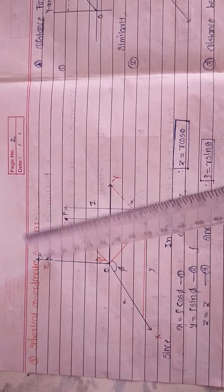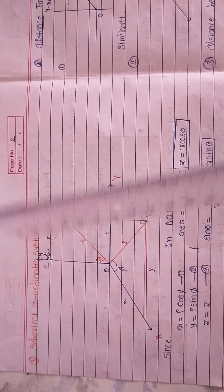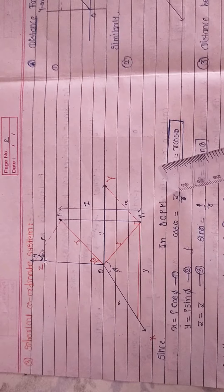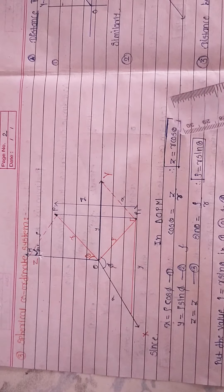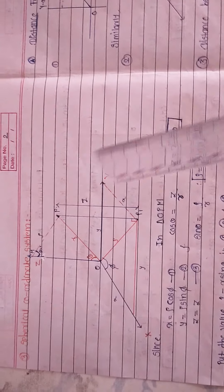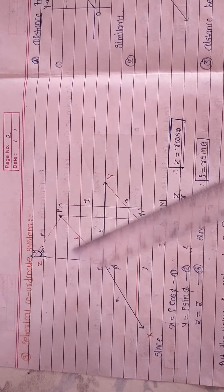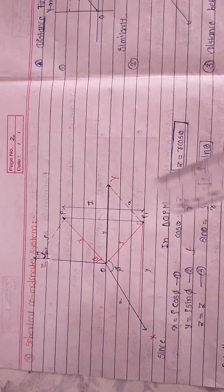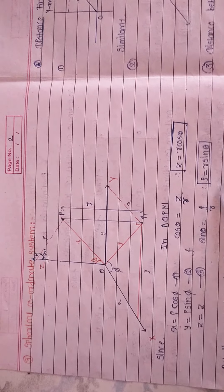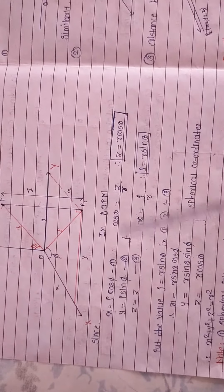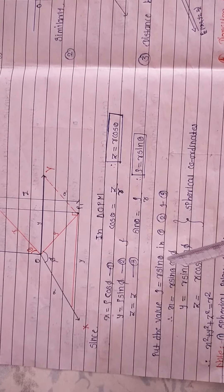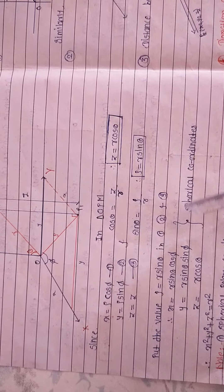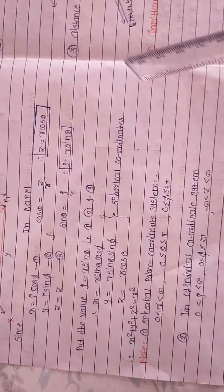From the cylindrical coordinates we already have those three equations. Now look at the triangle O, P, and z. In this triangle, cos θ = adjacent side (z) divided by hypotenuse (r), and therefore z = r cos θ. Similarly, sin θ = opposite side (ρ) divided by hypotenuse (r), giving ρ = r sin θ. Substituting ρ = r sin θ into equations one and two, we obtain x = r sin θ cos φ, y = r sin θ sin φ, and z = r cos θ. These are called the spherical coordinates.